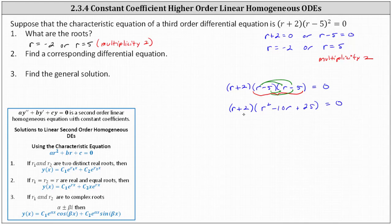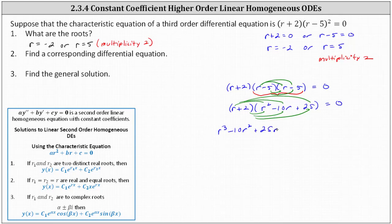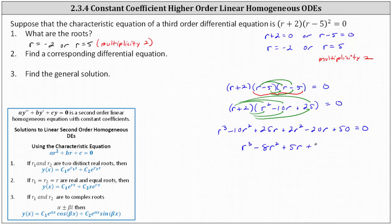Now we need to multiply the binomial and the trinomial, which means we have six products. This gives us r cubed minus 10r squared plus 25r. Distributing two, we have plus two r squared minus 20r plus 50 equals zero. Simplifying, we have r cubed, and then negative 10r squared plus two r squared gives us minus eight r squared. Then we have 25r minus 20r, which gives us plus five r. Then we have plus 50 equals zero.